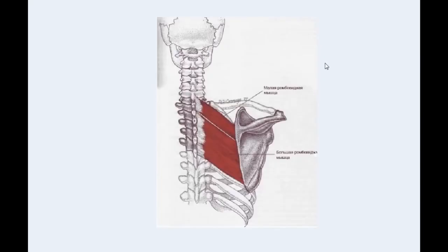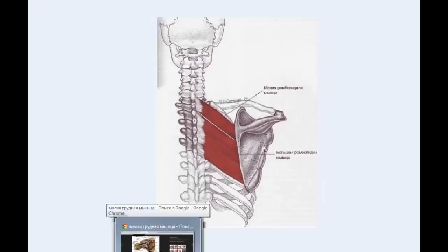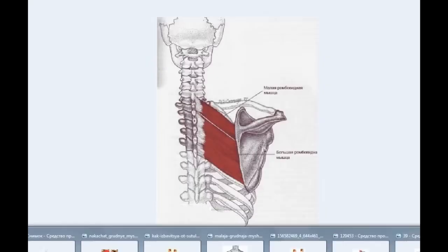But most often, of course, the entire rhomboid muscle becomes weak at the same time. It is precisely when the rhomboid muscle is weak that slouching occurs, because it holds the scapula from behind.